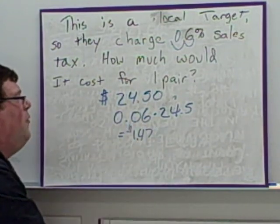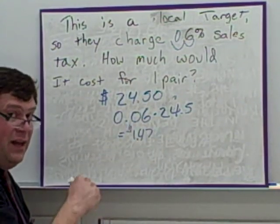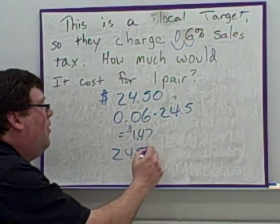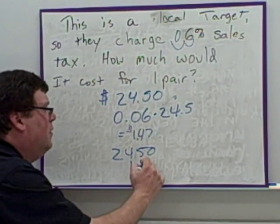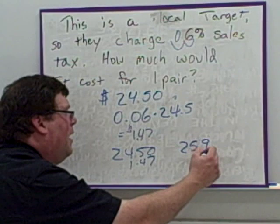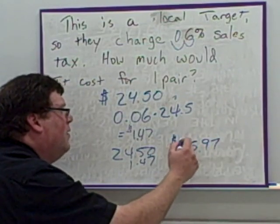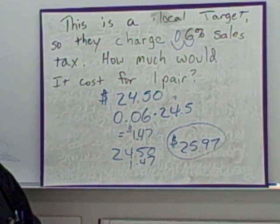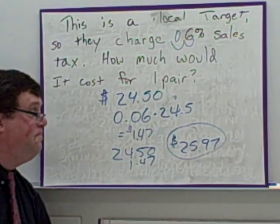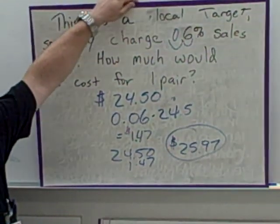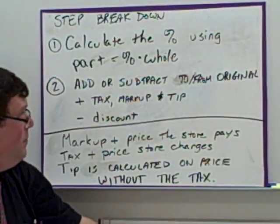Add that $1.47. It is sales tax, so it does bring the price up, so we are going to add it to the $24.50, and that's going to give you $25.97. When you go to the register on the sale price, that's how much you're going to pay because of 6% sales tax. All right, moving on, a little wrap up here.